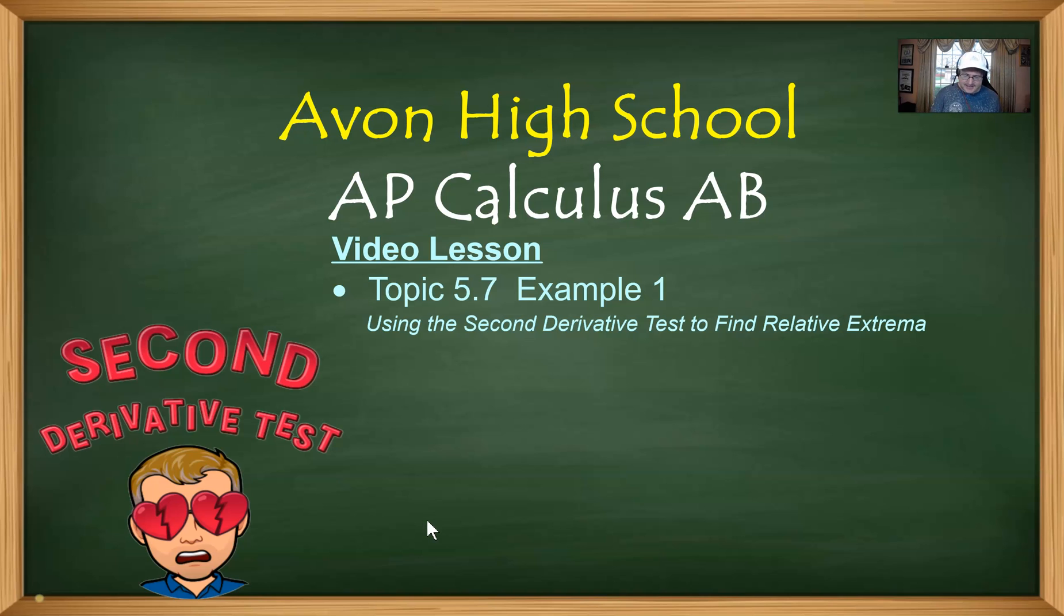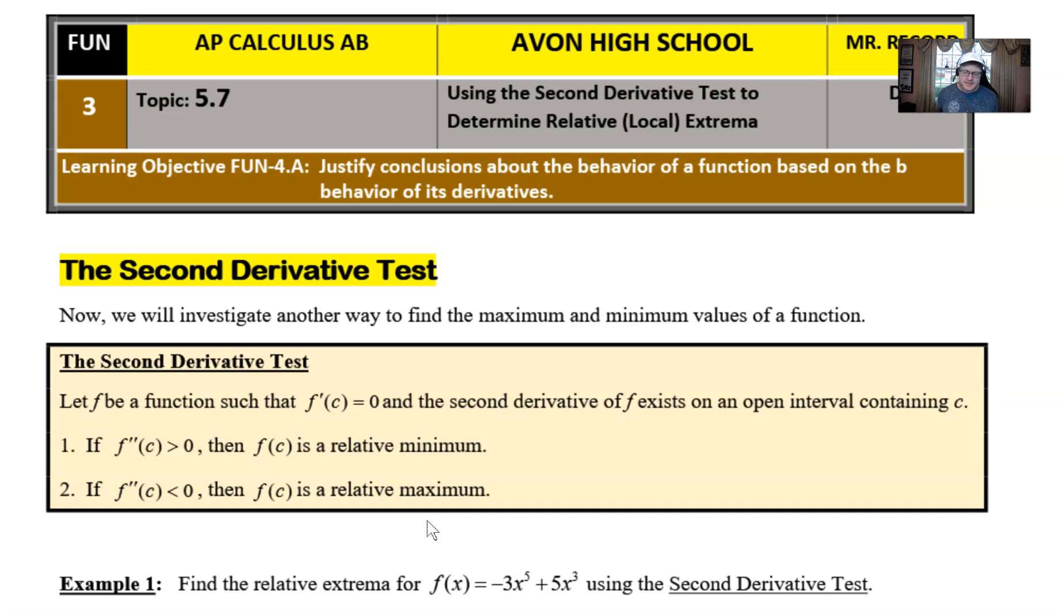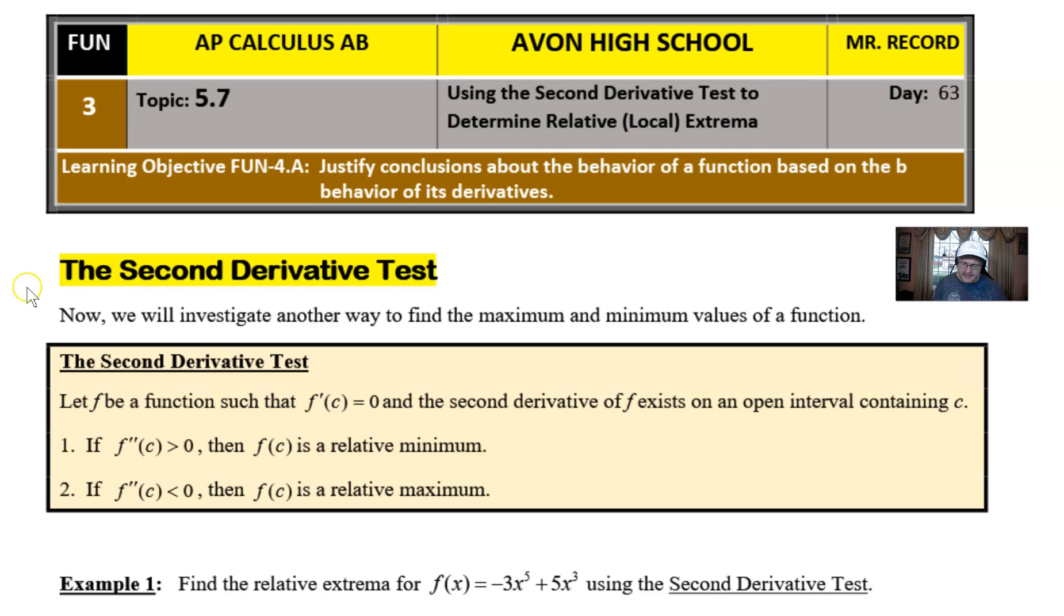So let's take a look at this example and see if we can make a little bit of sense of it. Here is the beginning of our 5.7 notes and as we can see, we're going to be looking at the Second Derivative Test and it says we're going to investigate another way to find the maximum and minimum values of a function, and I really think that hammers home the whole reasoning why we learn the Second Derivative Test.